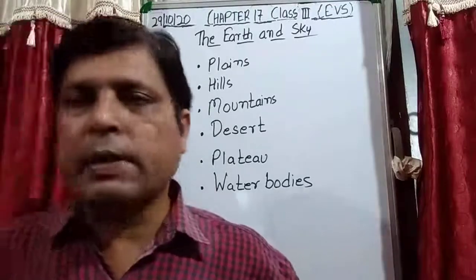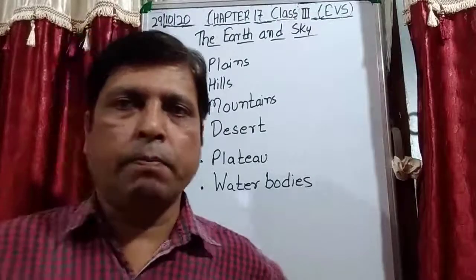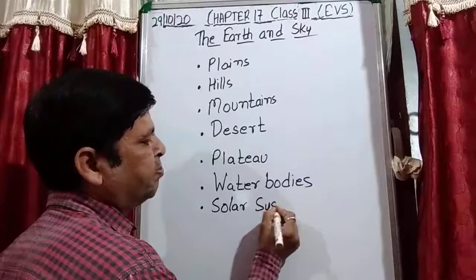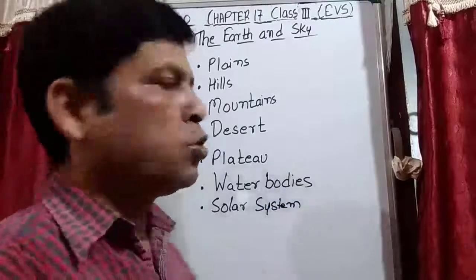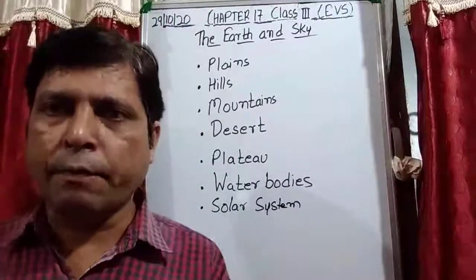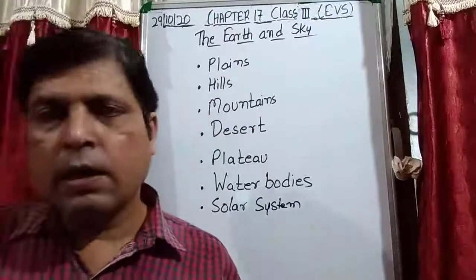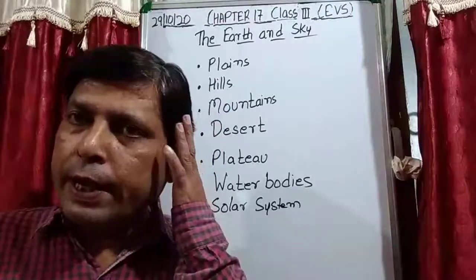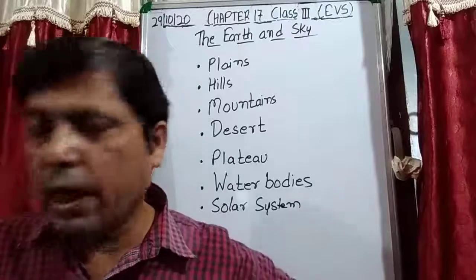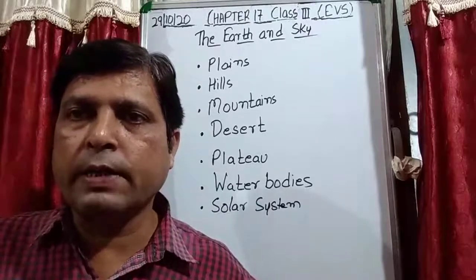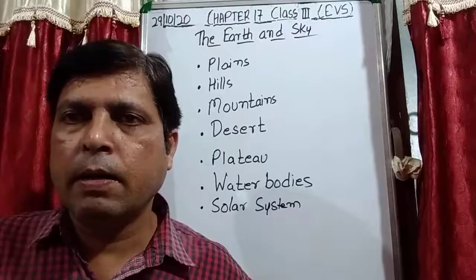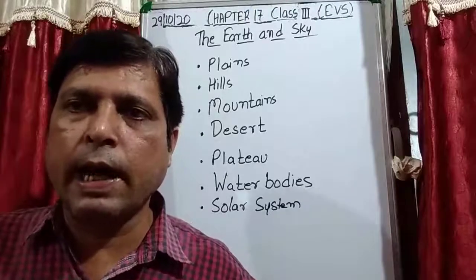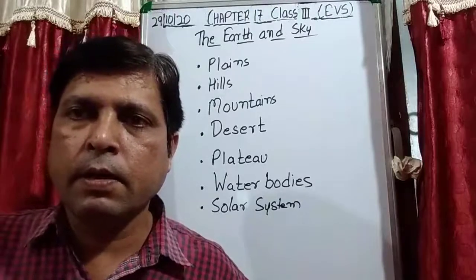Next we discussed about the solar system. Under this we discussed the family of the Sun — it is called the solar system, and it is made up of eight planets and their moons, or you can say natural satellites of the planets. For example, the Moon is the natural satellite of our planet Earth.